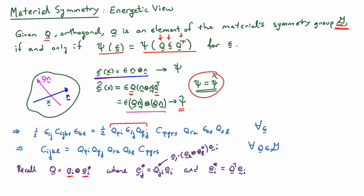We also have these other results that QJ star is equal to QJI EI and EI star is equal to Q transpose EI. The components here for QJI are the components of the tensor Q in the original basis, the unstarred basis.